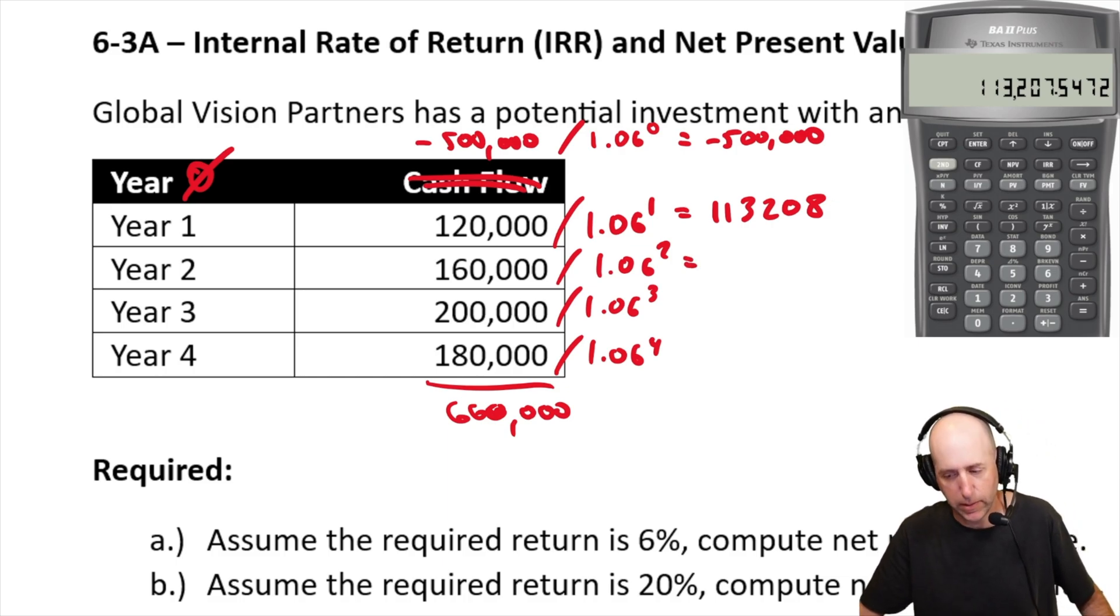160 divided by 1.06 squared, 1.1236, I go 1 over x times 160, 142,399.